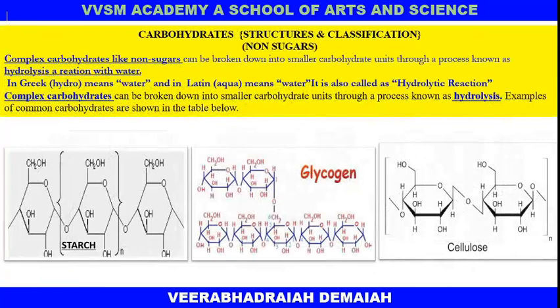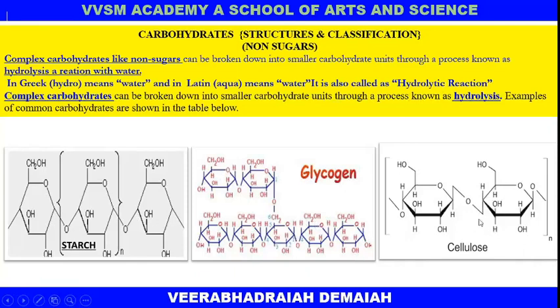Complex carbohydrates are broken down into smaller carbohydrate units through a process known as hydrolysis. A common carbohydrate table is shown below. Starch, glycogen, and cellulose are the important polysaccharides.